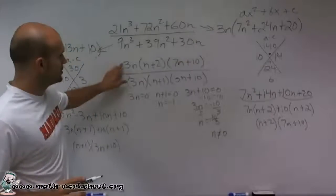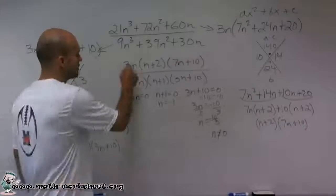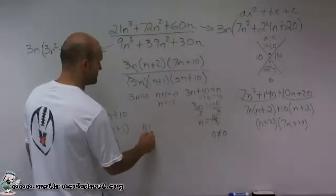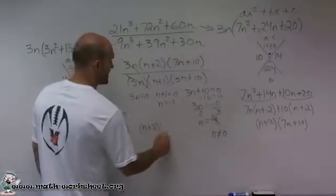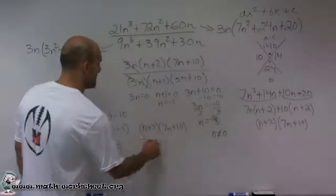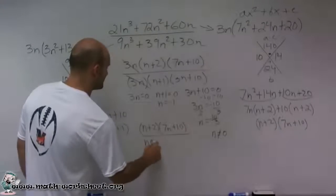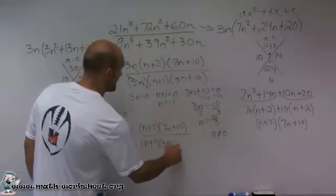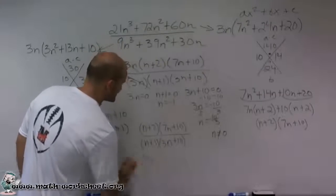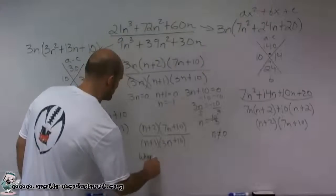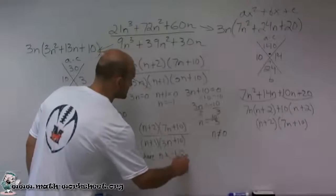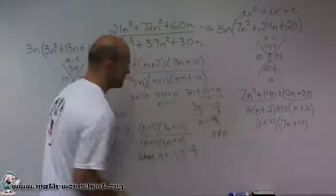However, we do notice that 3n and 3n are going to divide by each other. So my final answer is just going to be n plus 2 times 7n plus 10 divided by n plus 1 times 3n plus 10, where I'll write this below, n cannot equal negative 1, 0, and negative 10 thirds.